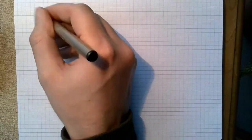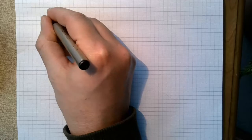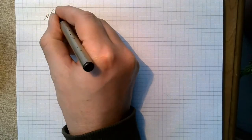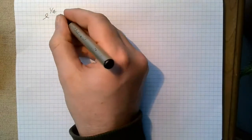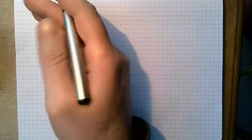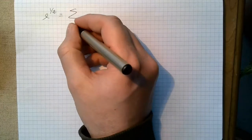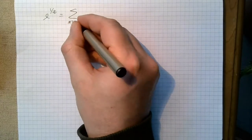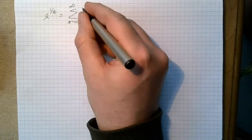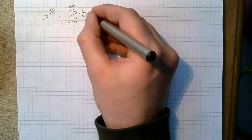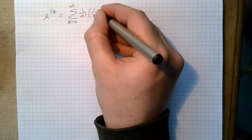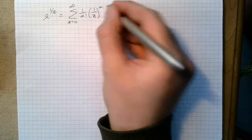So for example, if I have e to the 1 over z, I could write down the series by basically plugging 1 over z into the power series of the exponential, should be this, 1 over z to the n, right?